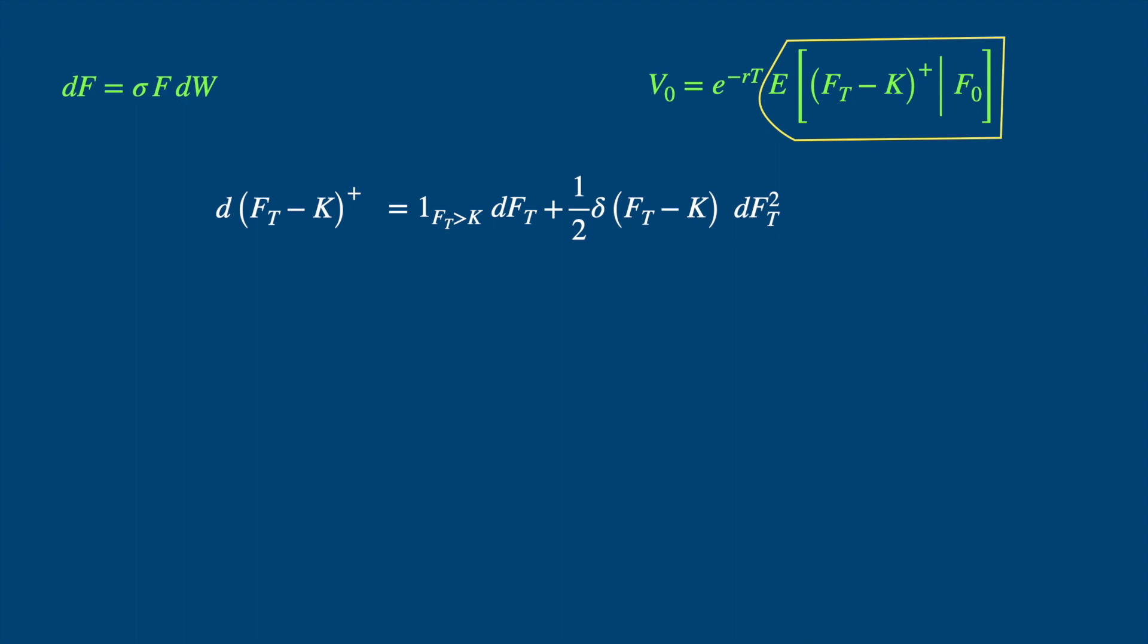Now we are after the value of the payoff function at capital T, so let's integrate from 0 to T. The integral of the left hand side will just keep the change and the payoff. This is its value at time T, minus its value at time 0. On the right hand side we just add the integrals. We can substitute for df, and then df squared. Remember the Ito's box rules which says square of dW is equal to dt.